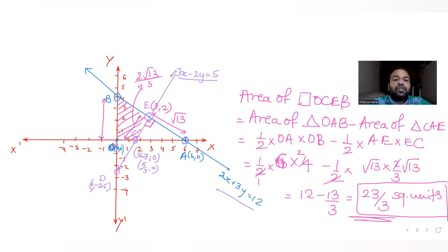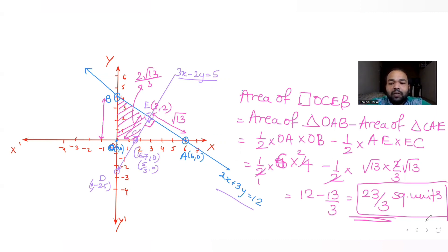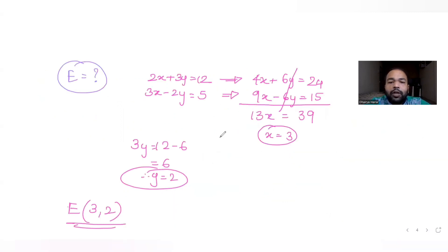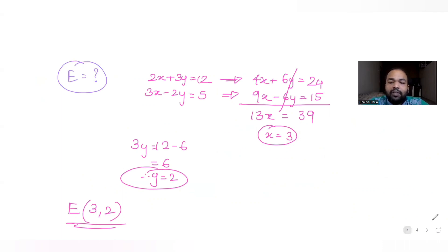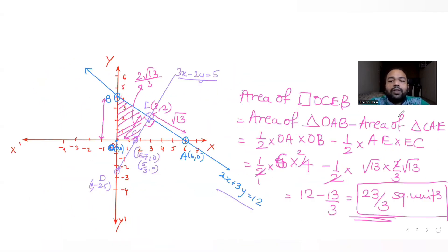Once we found the equation of the new line, we found its intersections with the x and y axes to get points C and D. Then we found the intersection of the two lines to get point E. Once we had E, we computed the area by subtracting the area of triangle CAE from the area of triangle OAB, giving us 23/3 square units.